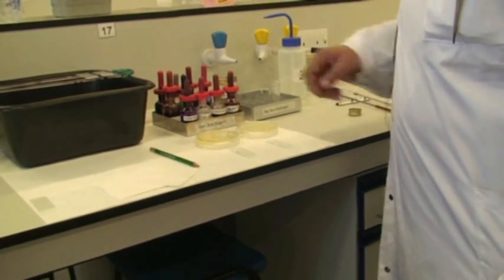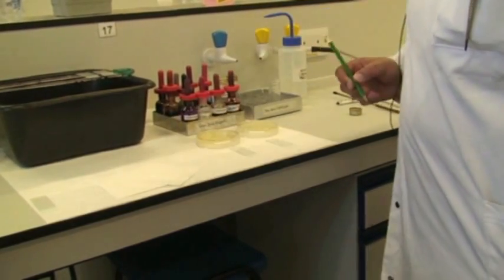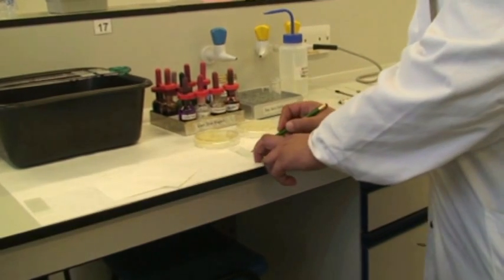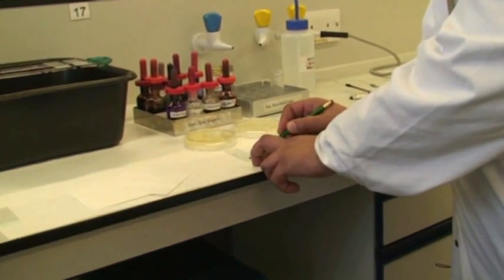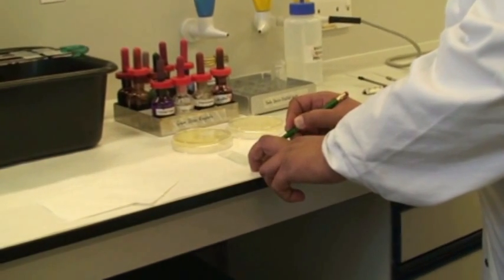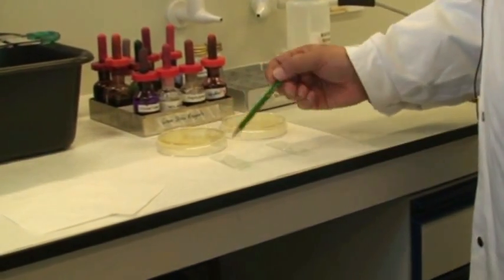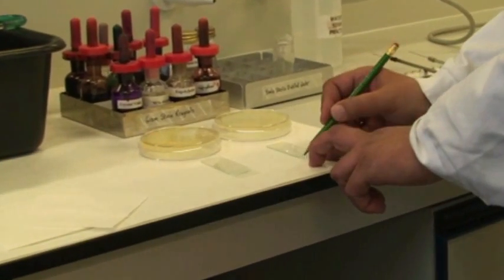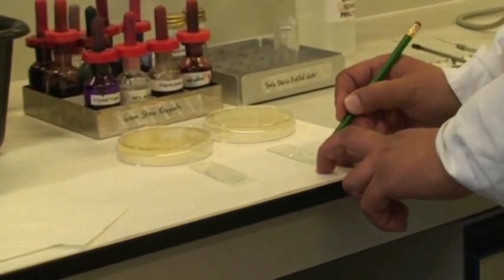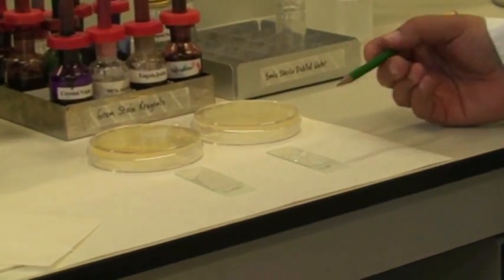It's important to label your slides before you actually put any bacteria on them. So just writing Staph aureus on the first one, because we're going to be transferring Staph aureus onto here, and E. coli on the second one, because we're going to be transferring E. coli onto this one.